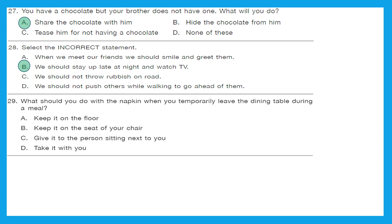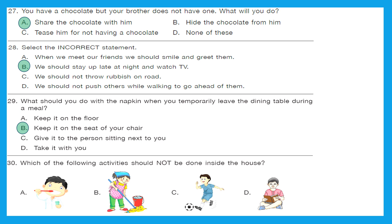Question 29: What should you do with your napkin when you temporarily leave the dining table during a meal? As per table etiquette, you should keep it on the seat of your chair, since you are not completely done eating. Option B is the right answer. Question 30: Which of the following activities should not be done inside the house? You simply need to find the outdoor activity — playing football. Option C is the right answer.